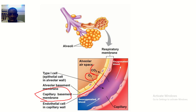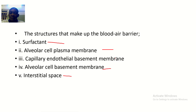You can notice there is an exchange of oxygen and carbon dioxide at this space. This is where deoxygenated blood gets oxygenated and becomes oxygenated blood. So these are the five structures that make up the blood-air barrier: surfactant, alveolar cell plasma membrane, capillary endothelial basement membrane, alveolar cell basement membrane, and the interstitial space.